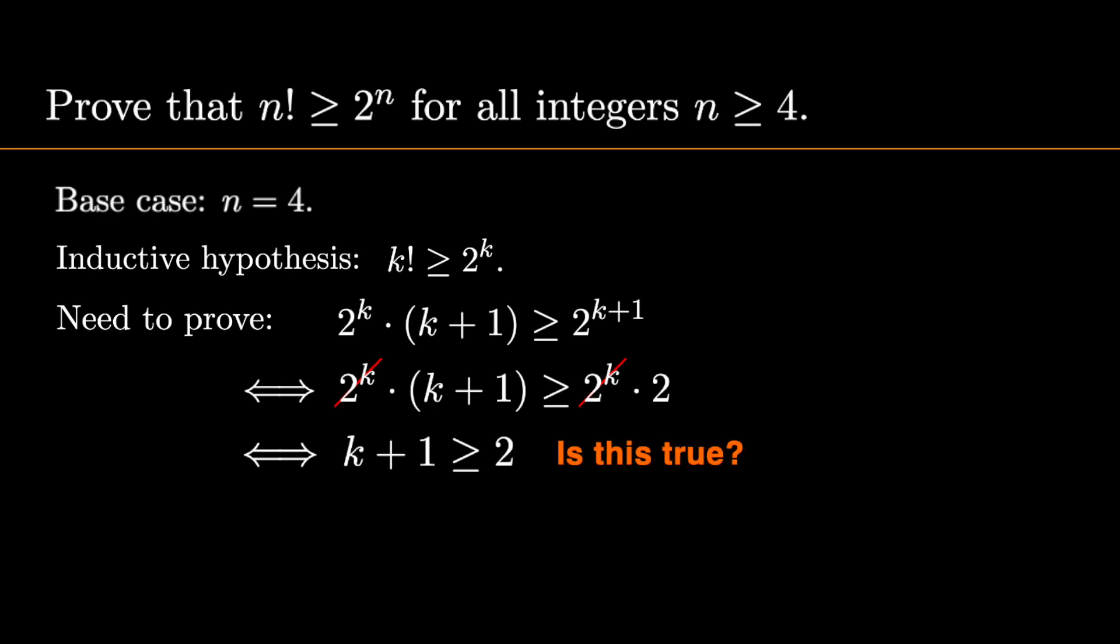Now, is this true? We started with the number k at least 4, so the left-hand side is at least 5, which is greater than or equal to 2. So this inequality is true.